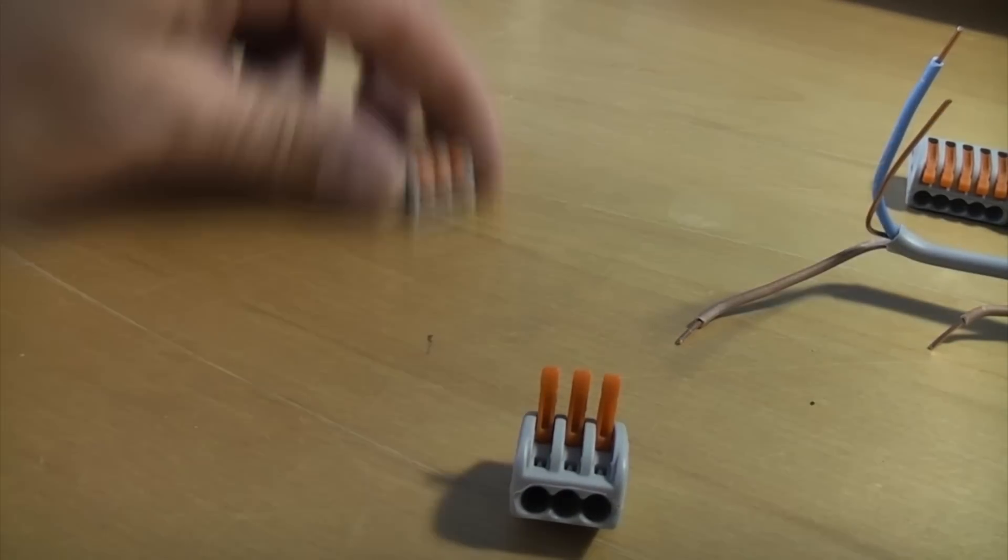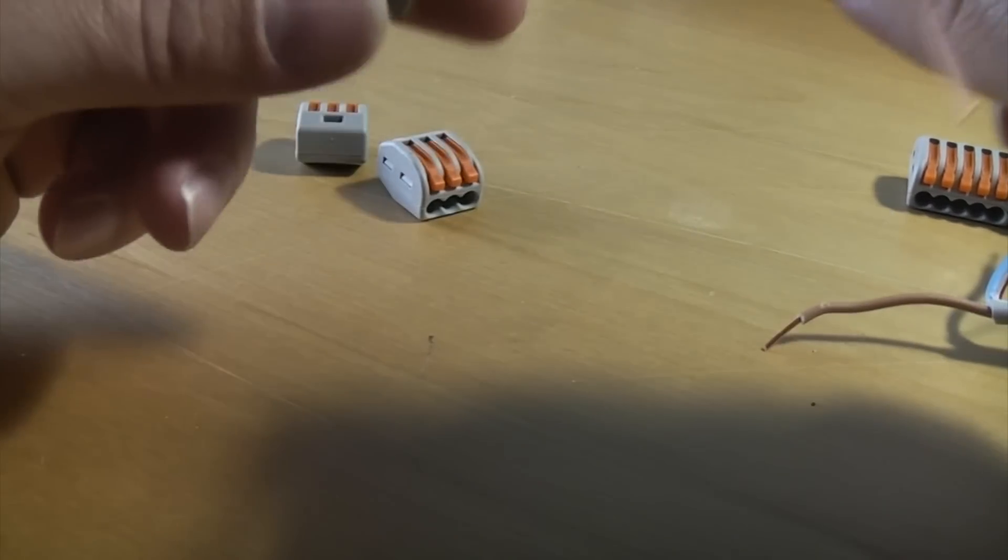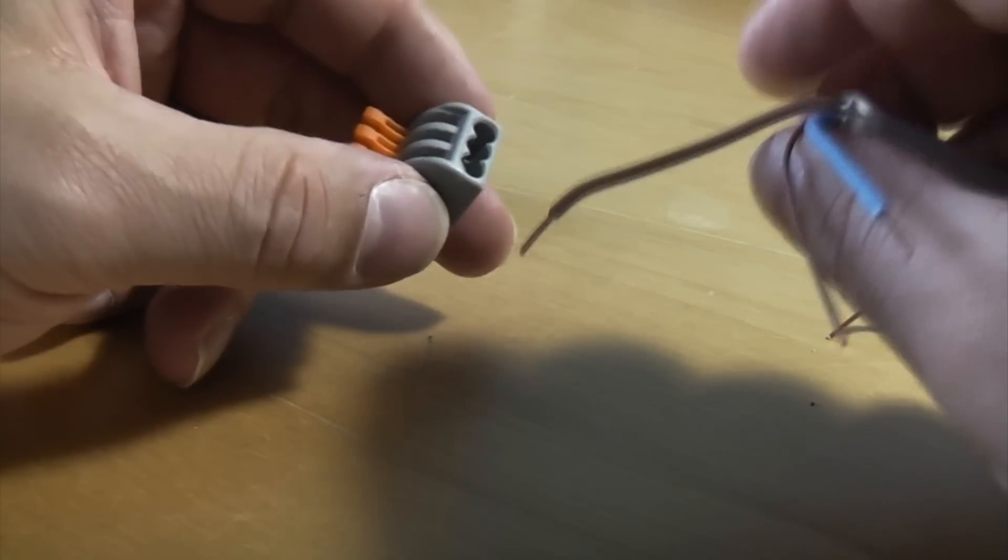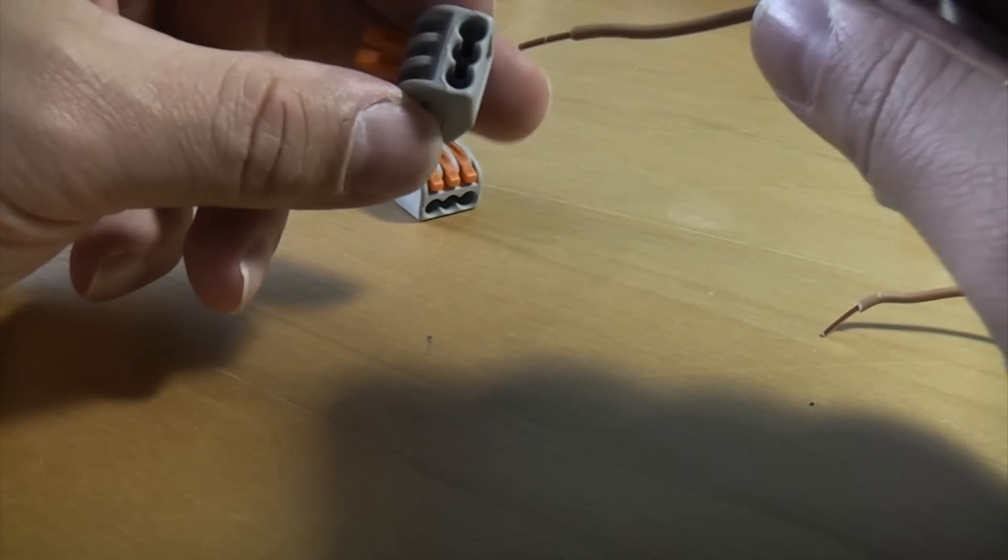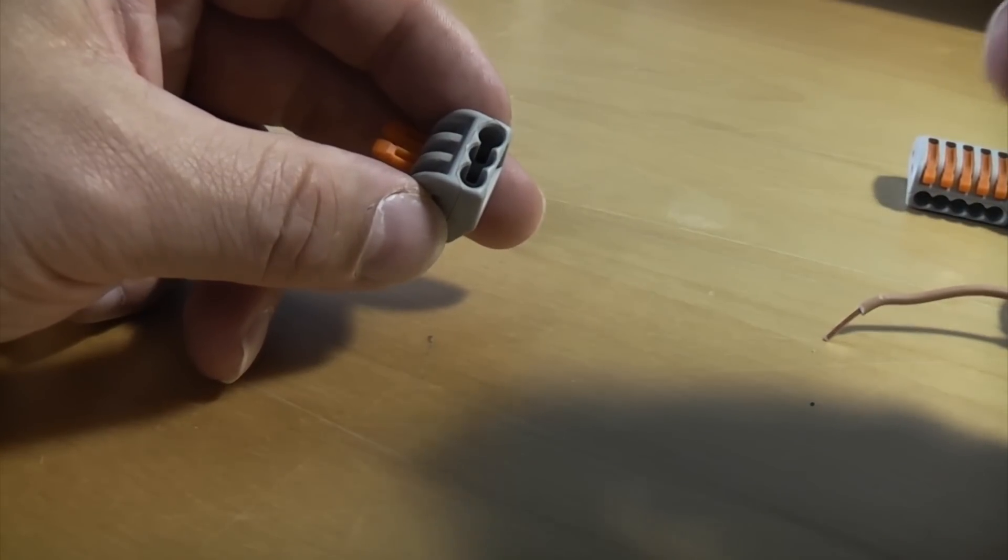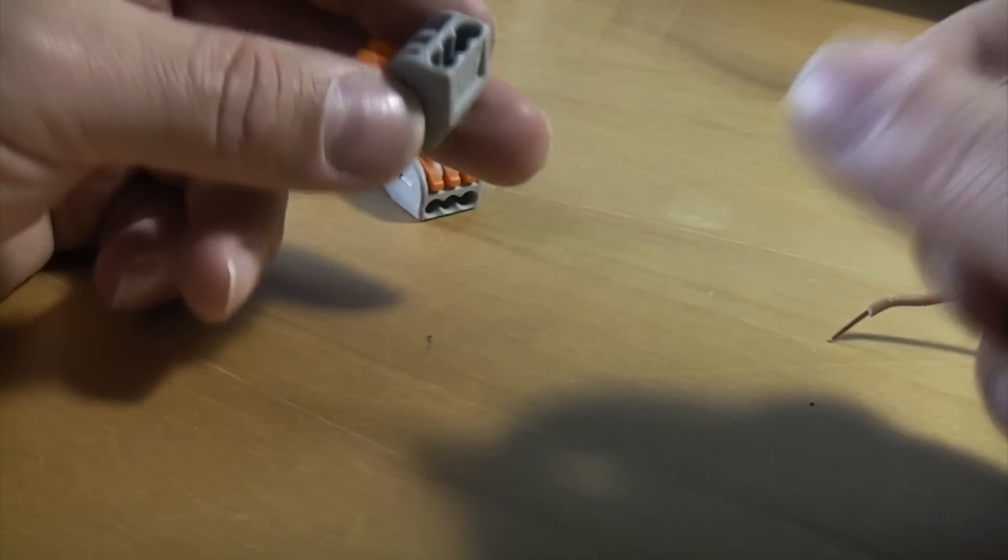I'm just going to give you a demonstration now of how you'd actually use these. One of my favorite places where I'd use them is if you were changing a light fitting and you had a ceiling rose up there. You take the ceiling rose off and you need to connect all your three live wires together. So with one of these it's really simple.